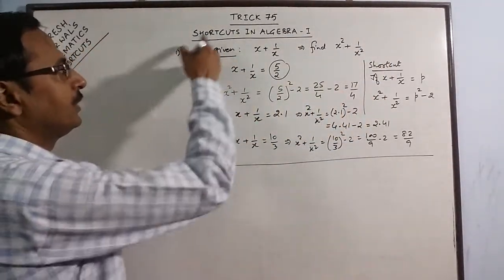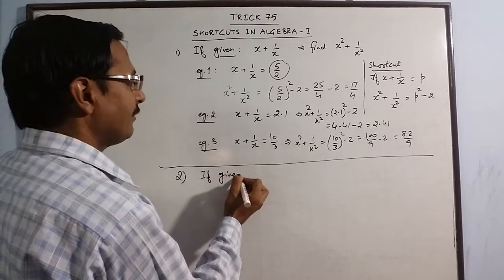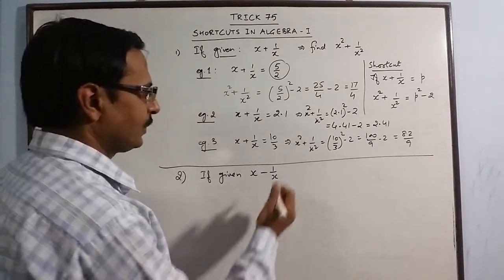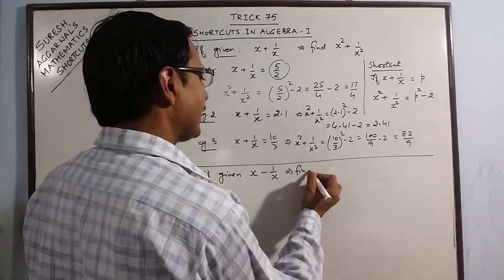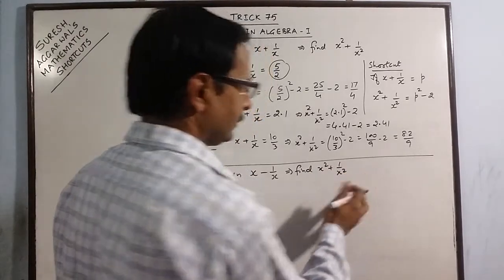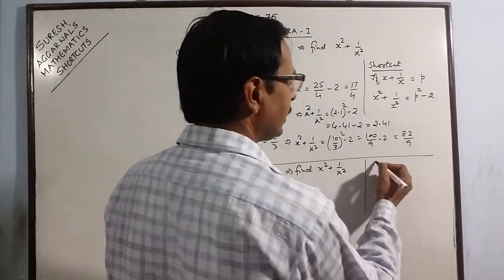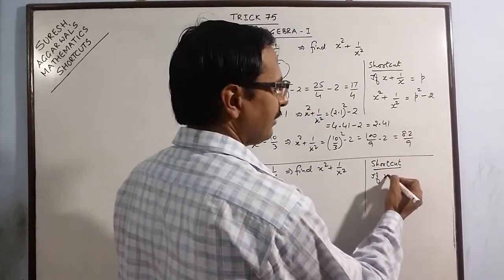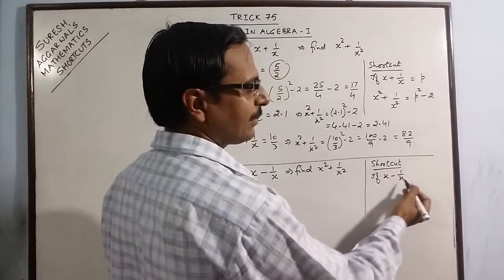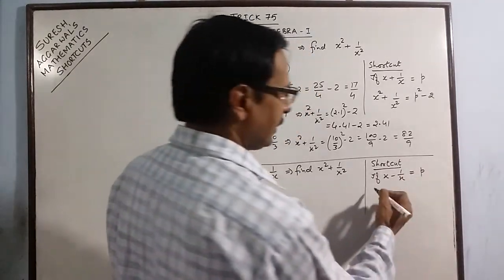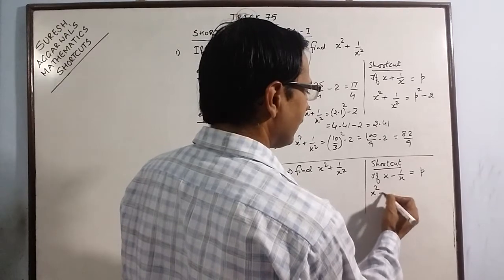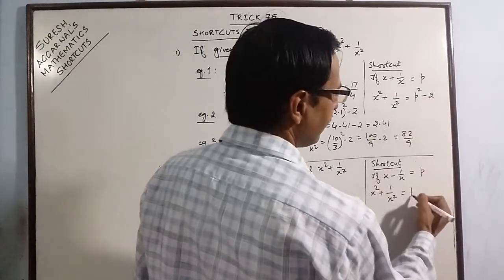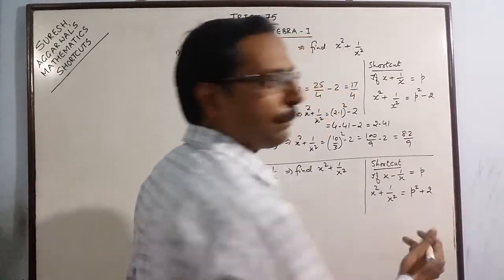Simultaneously, if you are given the value of x minus 1 by x, then also you can find x squared plus 1 over x squared. For this, the shortcut is slightly different. If there is a minus sign in between x and 1 by x and you are given the value as p, then the value of x squared plus 1 over x squared, since the sign changes here, the sign will change here also. So the value will be p squared plus 2 this time.